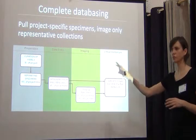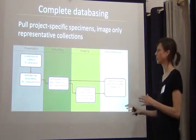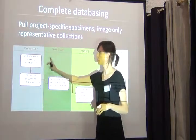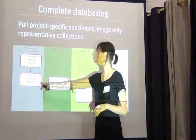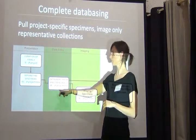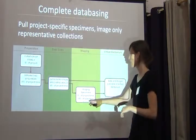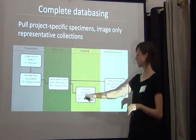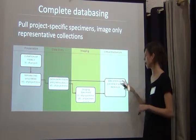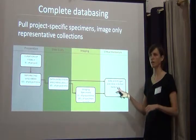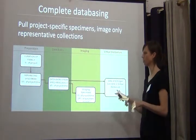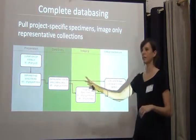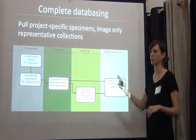In terms of designing workflows, it's pretty simple. We would curate the family, separate the specimens, do all data entry from the label, image about 15% of the specimens — which took about 5% of the time — and then put everything available online. So it's a very simple workflow: curation, separating, data entry, imaging, online.